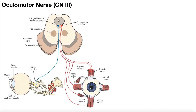In the previous video, we started talking about cranial nerve 3, which is the oculomotor nerve. Remember that this is a purely motor nerve — it has no sensory components whatsoever, all motor. There are two parts of the oculomotor nerve. The part we covered in the previous video was the general somatic efferent, the GSE component of cranial nerve 3.